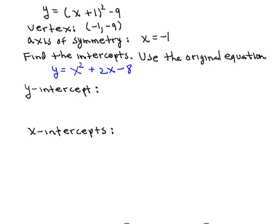I have stated at the top here the new form for the equation that we found by completing the square, which is y equals x plus 1 quantity squared minus 9. And we determined the vertex to be negative 1, negative 9, and the axis of symmetry to be x equals negative 1.